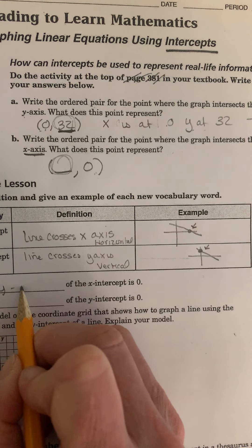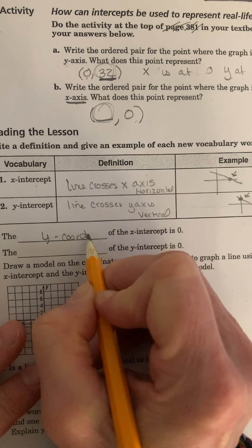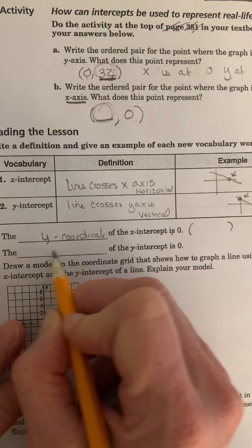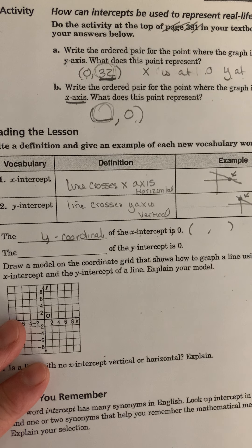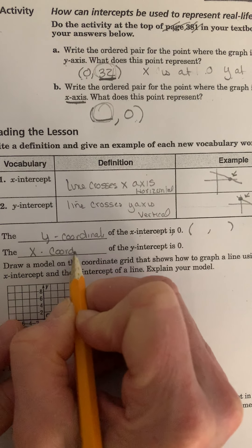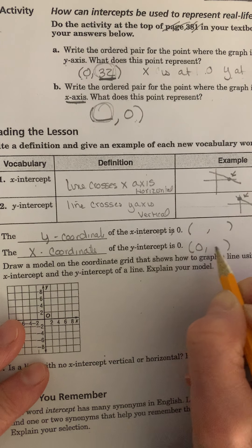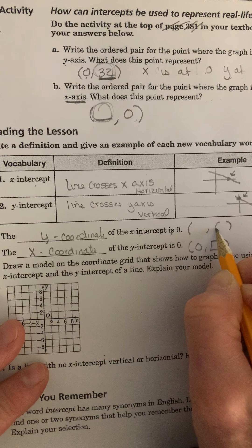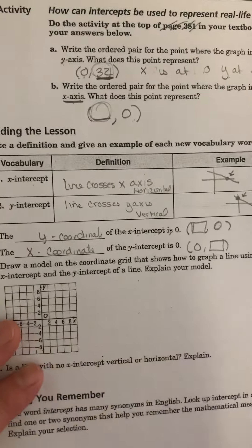The y-coordinate of the x-intercept is 0. So when I write it like this, and the x-coordinate of the y-intercept is 0. So I would want the y, and for this one the y would be 0 when I want the x. And they would have numbers.